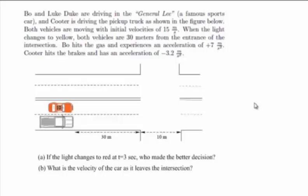Bo and Luke Duke are driving in the General Lee, a famous sports car, and Cooter is driving the pickup truck as shown in the figure below.